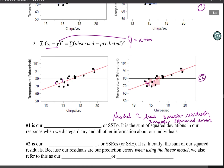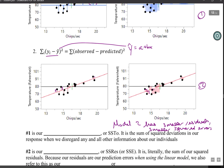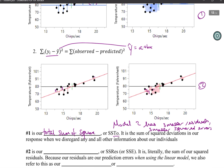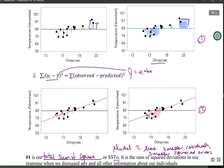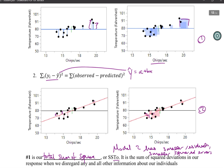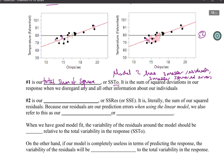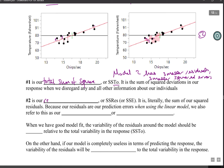All these squared errors — all these blue squares — give us our total sum of squares, or SS Total. It is the sum of squared deviations in our response when we disregard any and all other information about our individuals, such as disregarding the chirps per second. When we use the grand mean, we're ignoring that chirp frequency information and saying temperature is just the average, a constant.